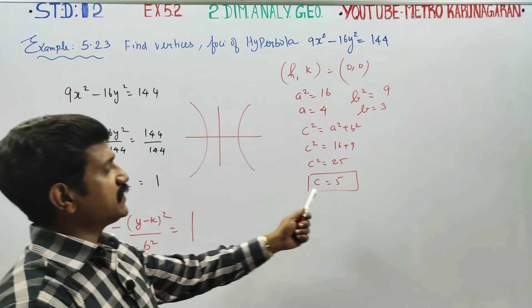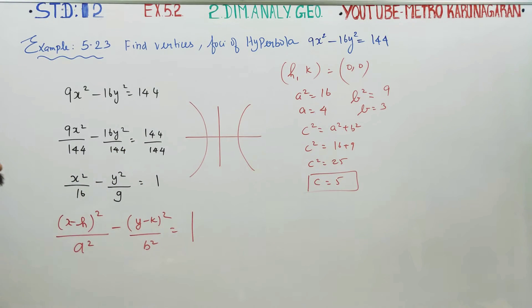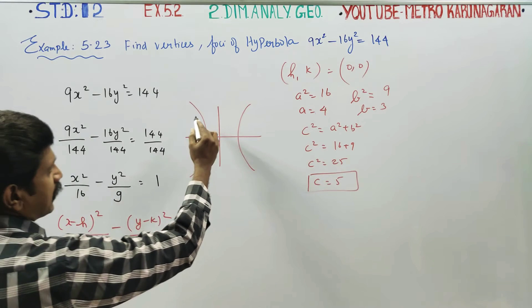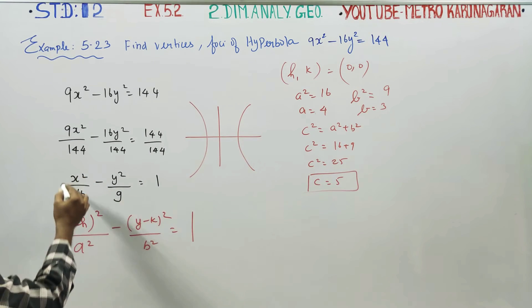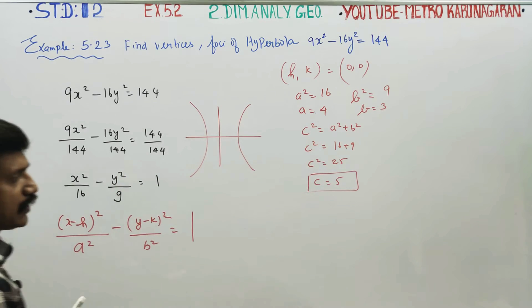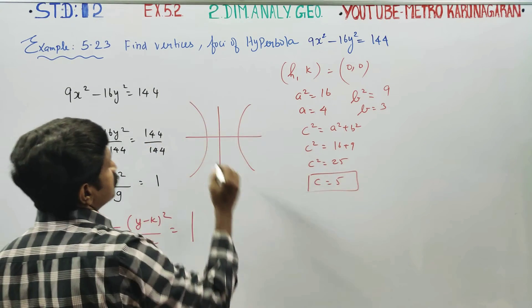So a is ready, b is ready, c is ready. It's a horizontal hyperbola. Now for the vertices.